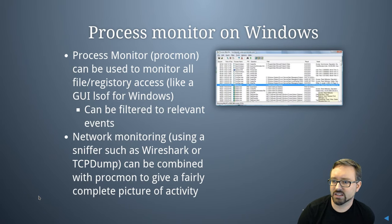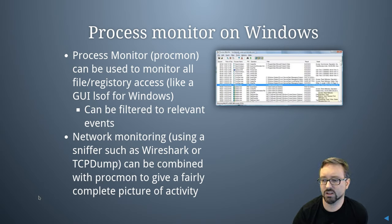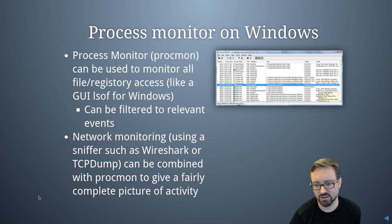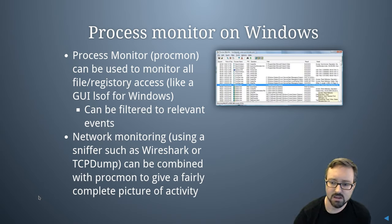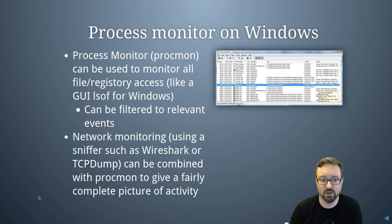On Windows you can use Process Monitor to look at file and registry access, and on Linux there's lsof which does something similar — you can filter it to look at the details you're interested in. You can also use network monitoring tools like Wireshark and tcpdump, and combine that with something like procmon to get a comprehensive view of what the program is doing.